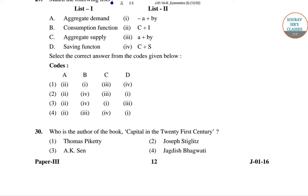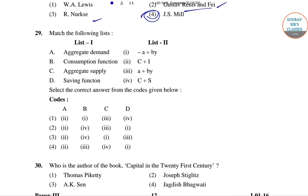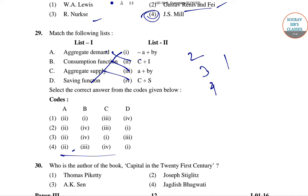Question 29: Aggregate demand will be C plus I, consumption function is given, aggregate supply will be C plus S, and saving function is given. Matching the order as 2, 3, 4, 1 — option 4 is the right answer.